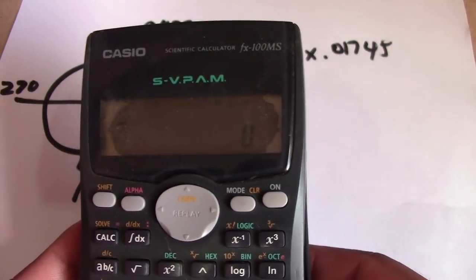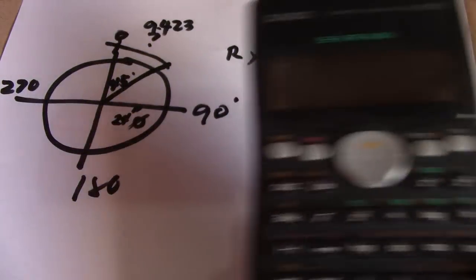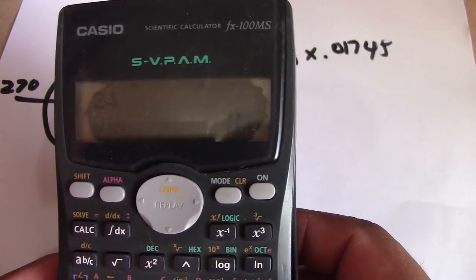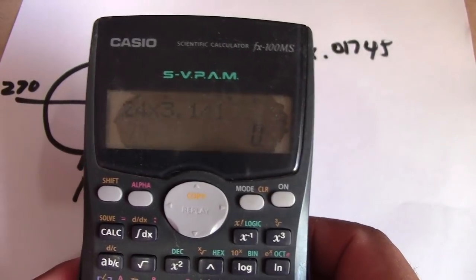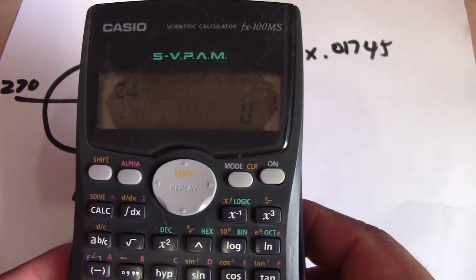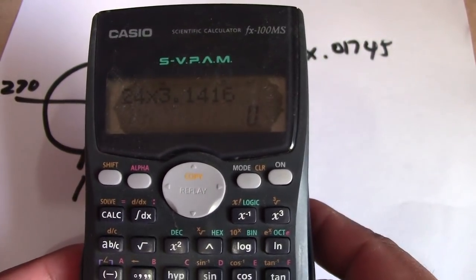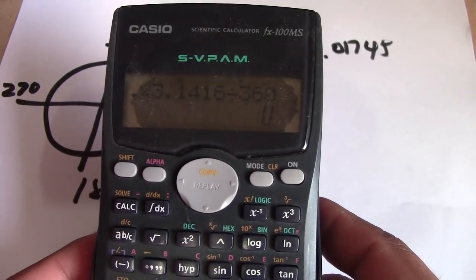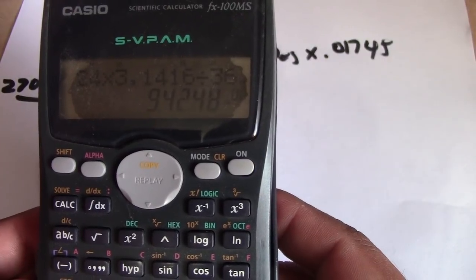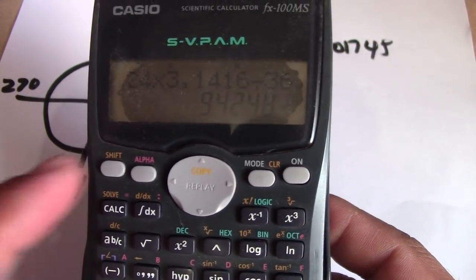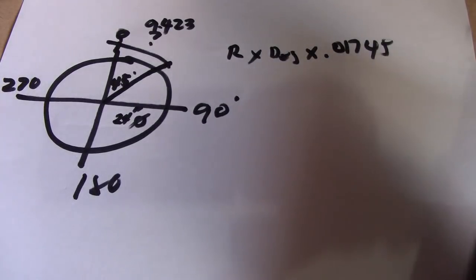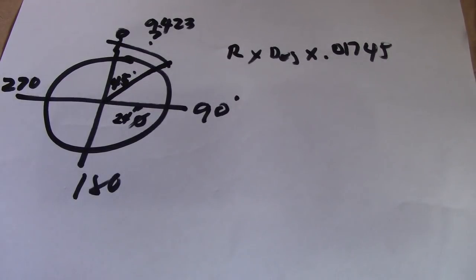Let's verify with this second formula. Our outside diameter is 24, multiplied by 3.1416, divided by 360, times 45 degrees. We also get 9.42 — the same answer as the first formula. Both formulas give the correct arc length of 9.42 inches.